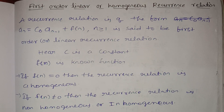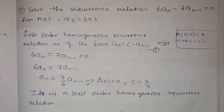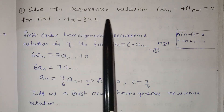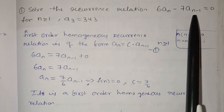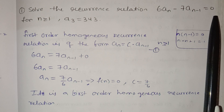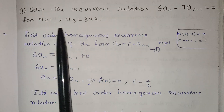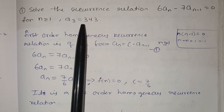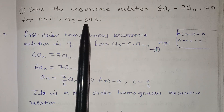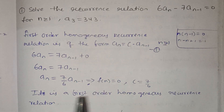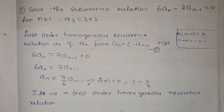Now let's solve a problem. Solve the recurrence relation: 6aₙ − 7aₙ₋₁ = 0, for n ≥ 1, given that a₃ = 343.